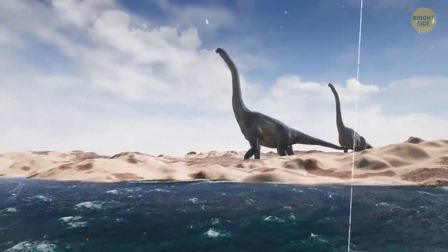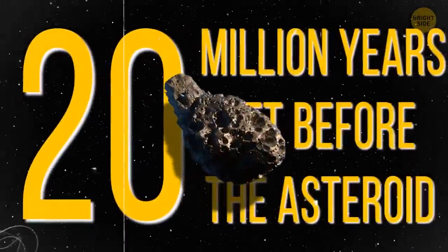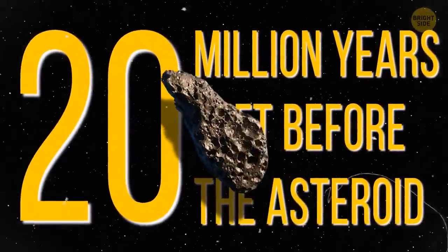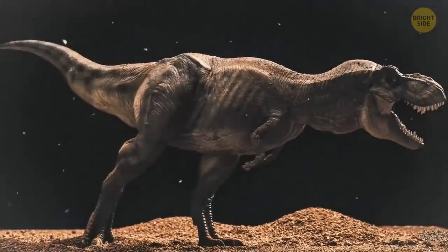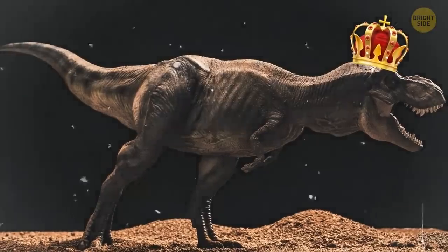Dinosaurs are still roaming around. They have around 20 million years left before the asteroid. T-Rex, a fearless hunter, becomes the king of the dinosaurs.